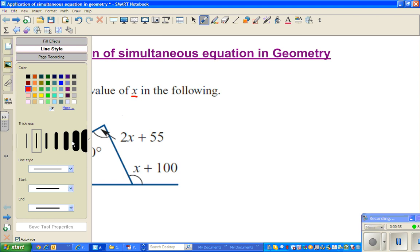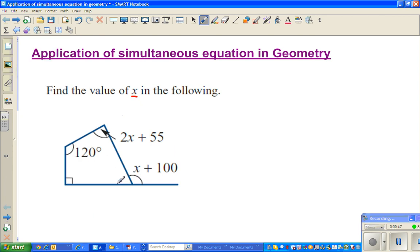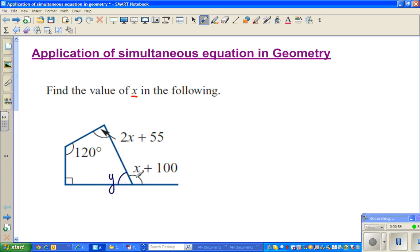What can we do? Now if you look at these two angles, what type of angles are there? These two would add up to 180. So I'm naming this angle as y. Can I say x + 100 + y is equal to 180. I'll take away 100 from both sides, so x + y is equal to 80.